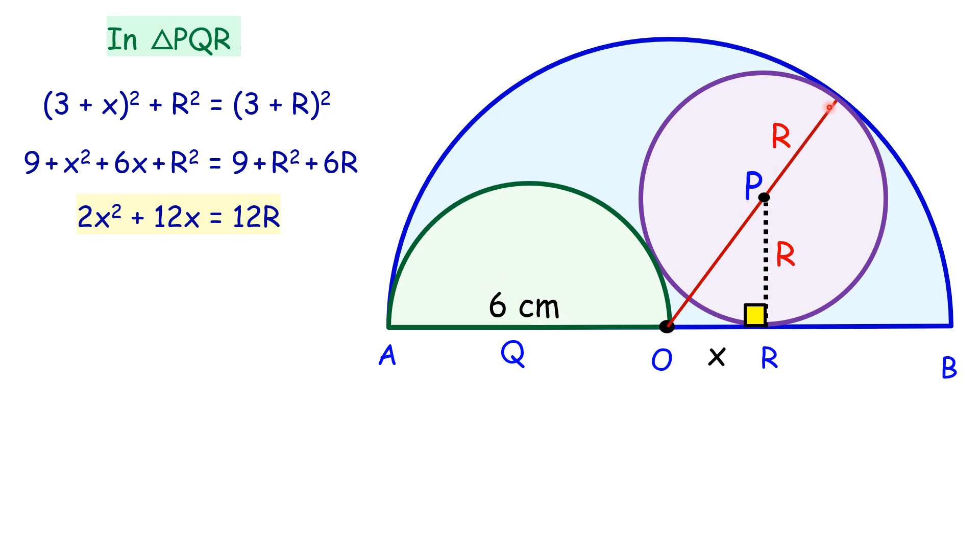This full length is 6, and out of which this is R. So OP is nothing but 6 minus R. We have got this right angle triangle, that's triangle OPR. In this yellow triangle, this angle is 90 degrees, so we will apply Pythagoras theorem.